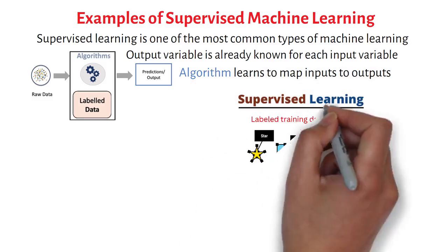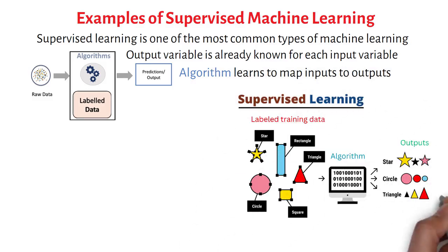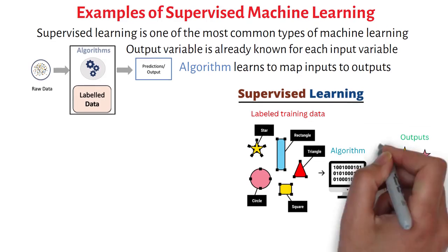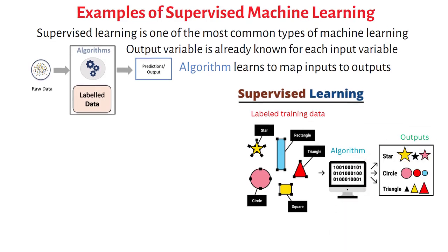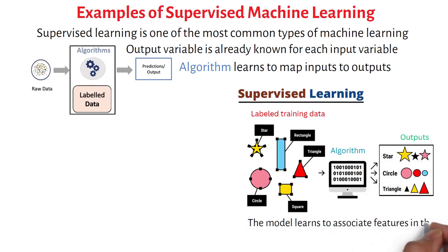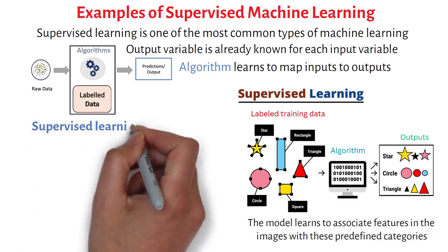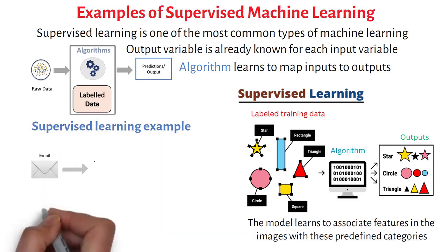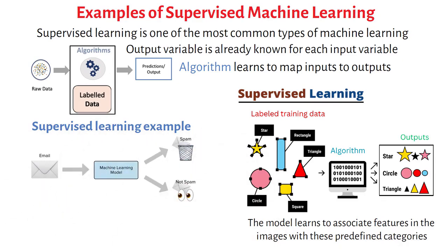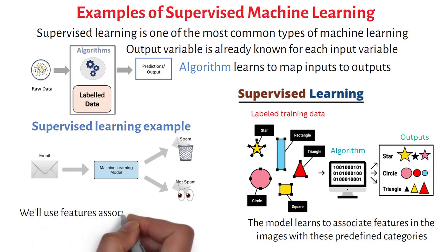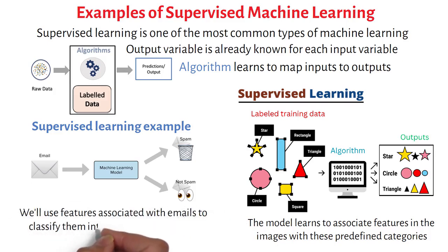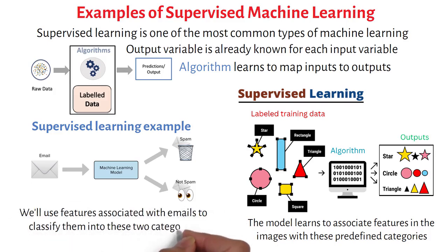Supervised learning is used because it relies on labeled training data, where each image has a known category. The model learns to associate features in the images with these predefined categories. Let's consider a supervised learning example where we predict whether an email is spam or not spam. We'll use features associated with emails to classify them into these two categories.